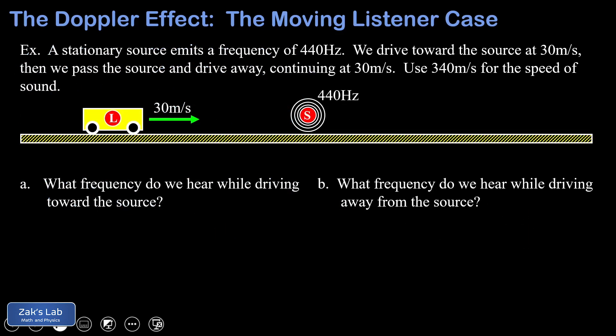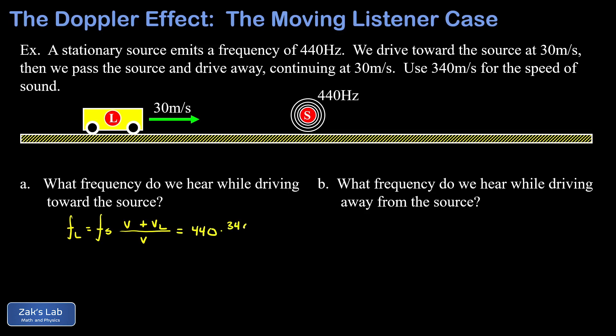Here's a simple example covering both the moving-toward and moving-away cases. We have a stationary source emitting 440Hz. We're driving toward that source at 30 meters per second, then pass it and drive away, also at 30 meters per second. The speed of sound is about 340 meters per second. For part A, the frequency heard while driving toward the source: we apply the formula with a plus sign. Plugging in, we have 440 times (340 + 30) divided by 340, which gives 479Hz.